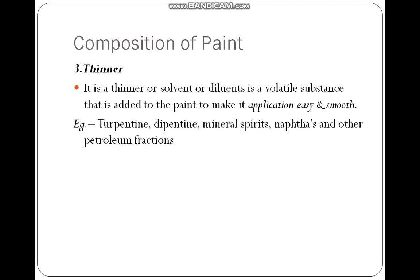Thinner, solvent, or diluents are volatile substances added to the paint to make its application easy and smooth. For example, turpentine, dipentine, mineral spirits, naphthas, and other petroleum fractions could be used as thinner.